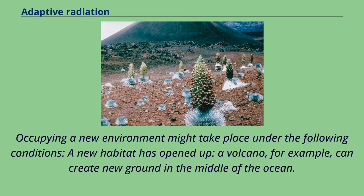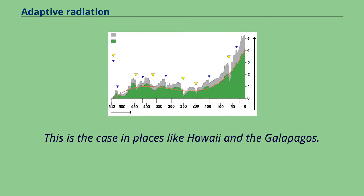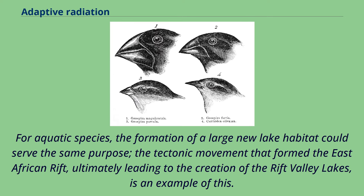Occupying a new environment might take place under the following conditions. A new habitat has opened up — a volcano, for example, can create new ground in the middle of the ocean. This is the case in places like Hawaii and the Galapagos. For aquatic species, the formation of a large new lake habitat could serve the same purpose. The tectonic movement that formed the East African Rift, ultimately leading to the creation of the Rift Valley Lakes, is an example of this.